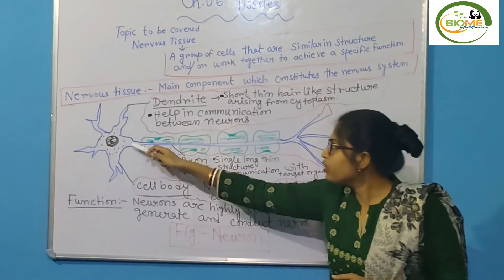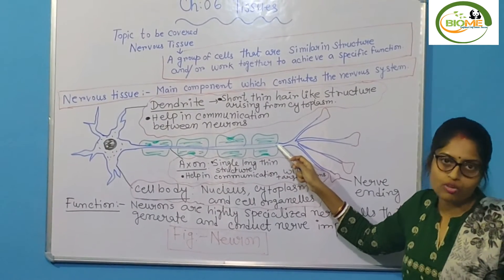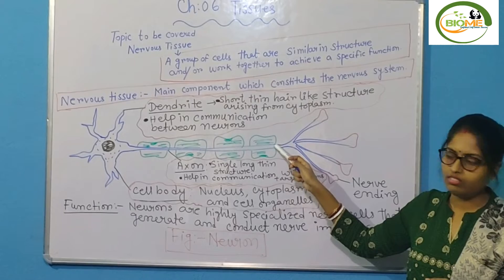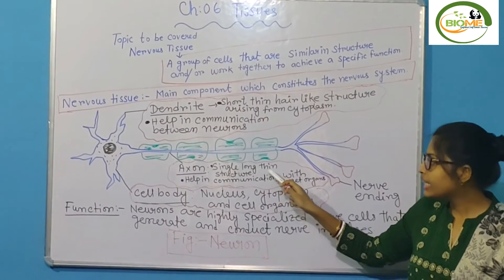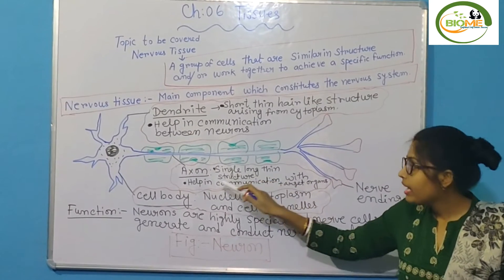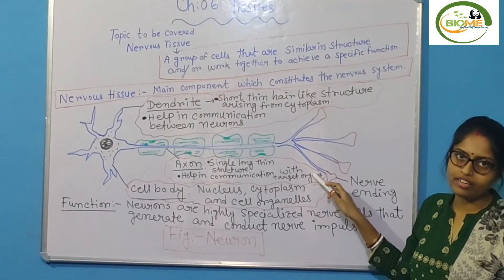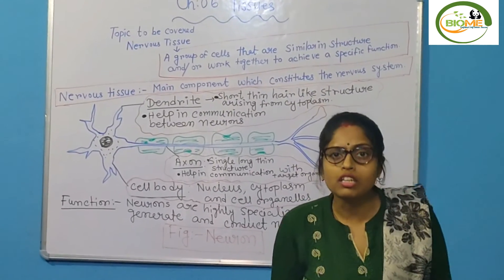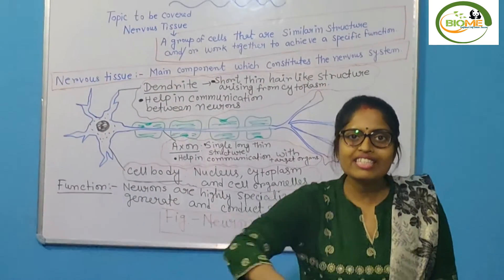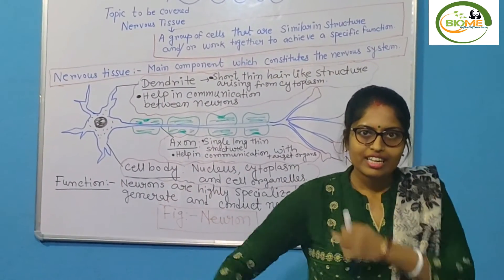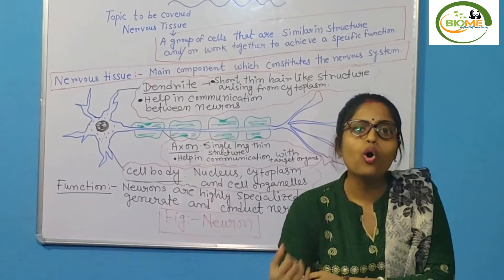You can also see a long slender structure, which is known as your axon. Axon is a single long thin structure that helps in communication with the target organ, for example a muscle. Suppose you are touching a hot object and suddenly you remove your hand — this hand is your target site or target organ.